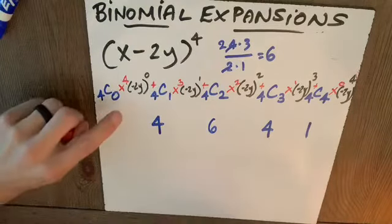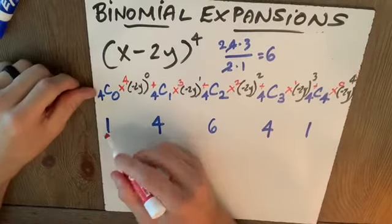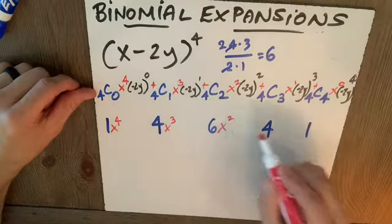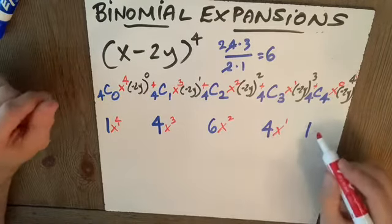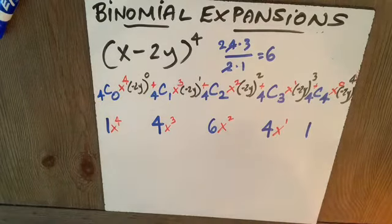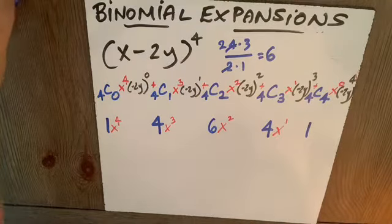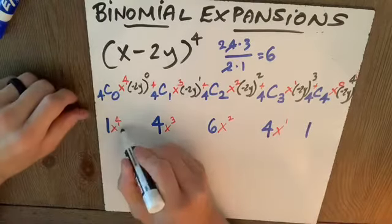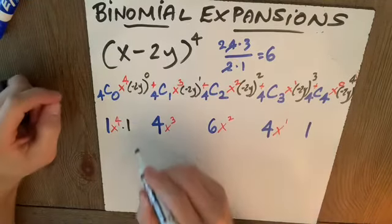My x, well, it's pretty simple. It's x to the fourth, x to the third, x squared, x to the first, x to the zero, which I'm not going to write. Now comes time for my second term. Negative 2y to the zero is 1. Do I really need to write that? Probably not.